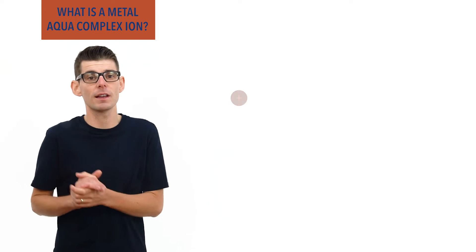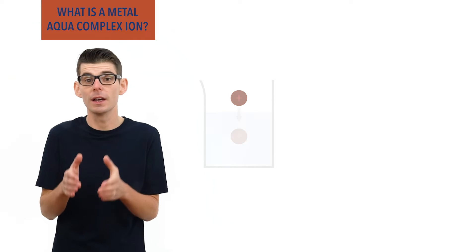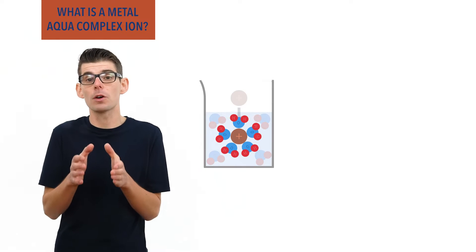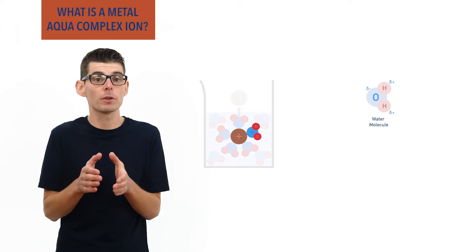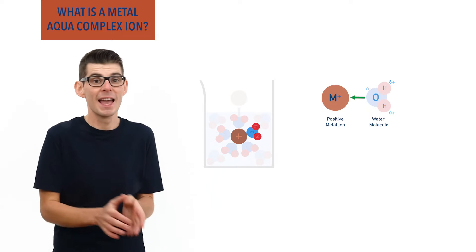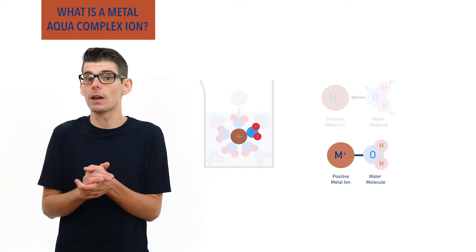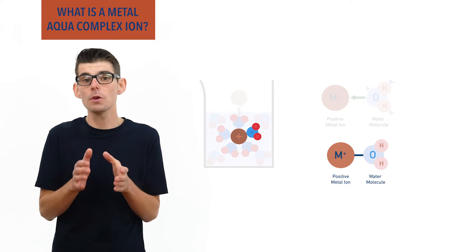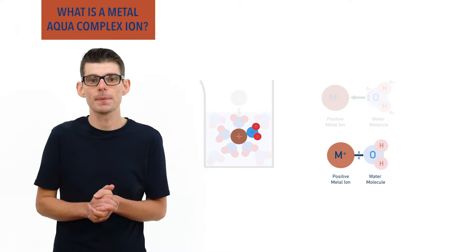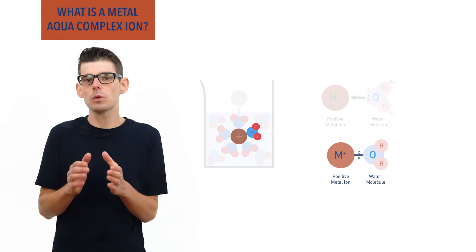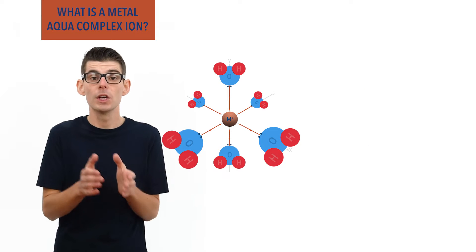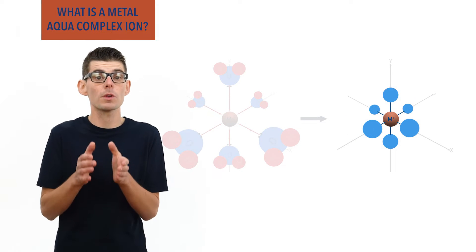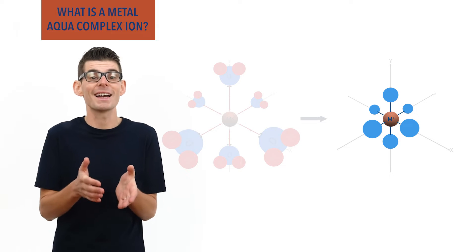If a positively charged metal ion is placed into water, water molecules surround the ion. Oxygen atoms in water molecules have a partial negative charge and get attracted to the positively charged metal ion, and a coordinate bond forms between the metal ion and the oxygen atom. The electrons forming the coordinate bond come from a lone pair of electrons on the oxygen atom. Only six water molecules can get close enough to a metal ion to form coordinate bonds with it, meaning an octahedral arrangement of water molecules forms around a central metal ion as it dissolves in water.